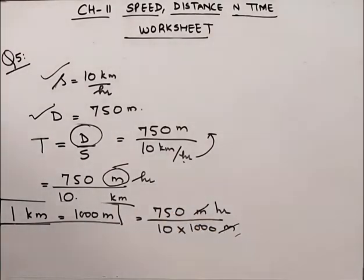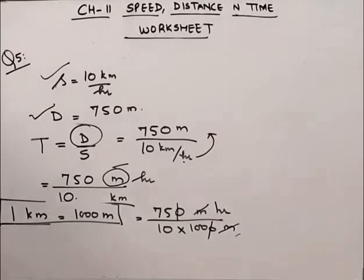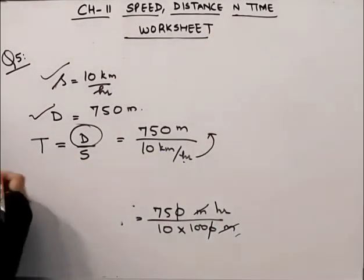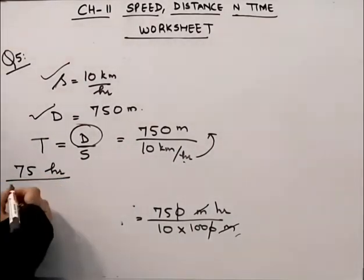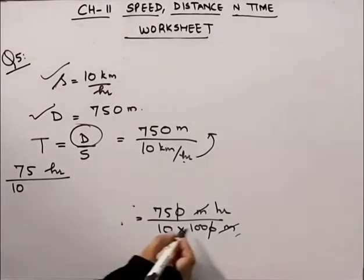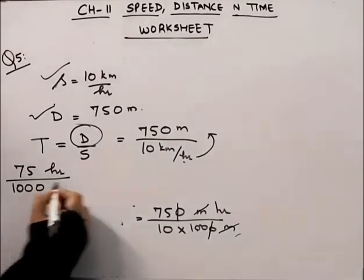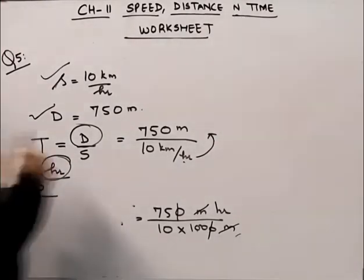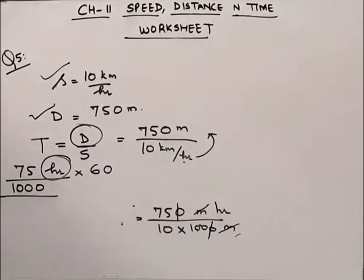Meters cancel out. This gives us 750 divided by 10,000 — counting 1, 2, 3 zeros — which is 1000. We are getting the answer in hours. If we have the answer in hours and multiply by 60, the answer will come in minutes.